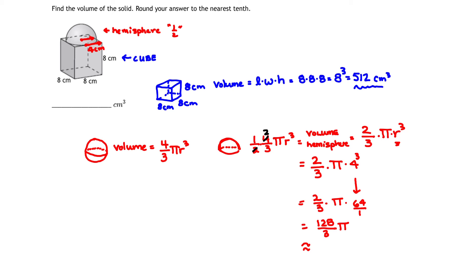128 divided by 3, 42.6666 times pi gives us approximately 134.041286 and so on. Now, I used the pi button. You could also use 3.14, approximately 3.14 if you like, but if you have that pi button on your calculator, it's better to use that one to be a little more exact. 3.14159 is also used sometimes, or the pi button on your calculator. So that tells me that the volume of my hemisphere is approximately 134.04 centimeters cubed.